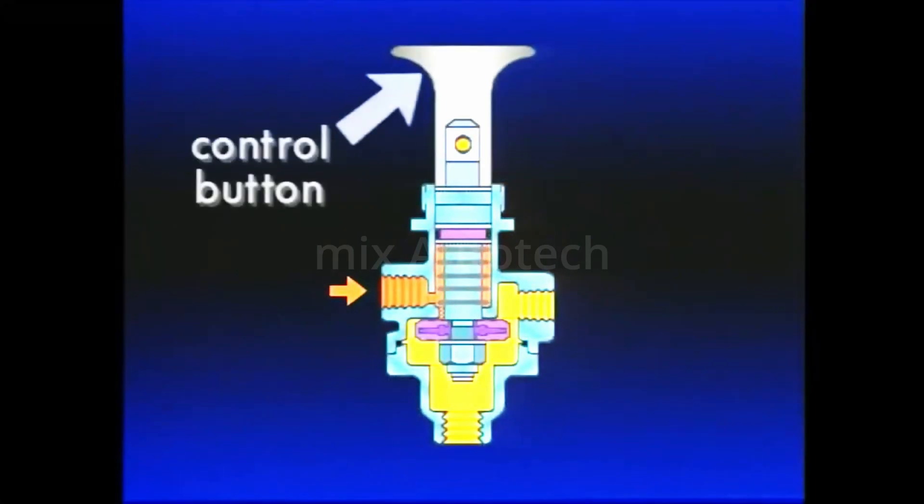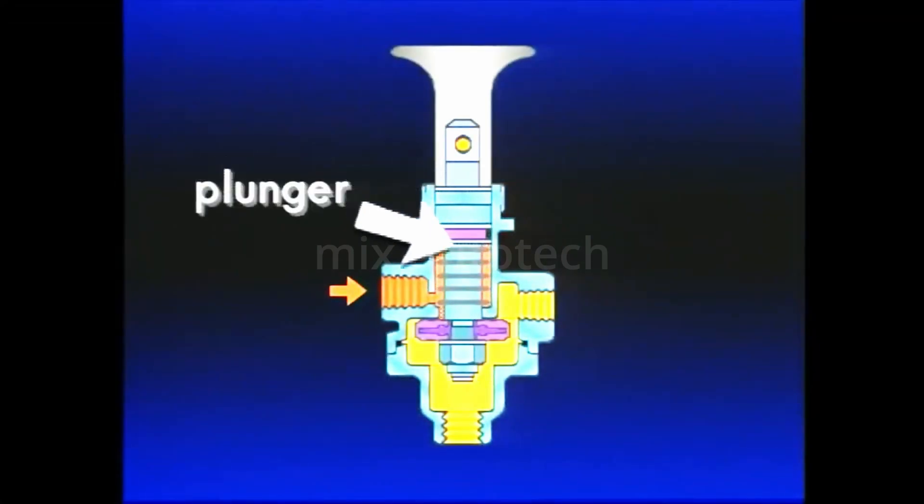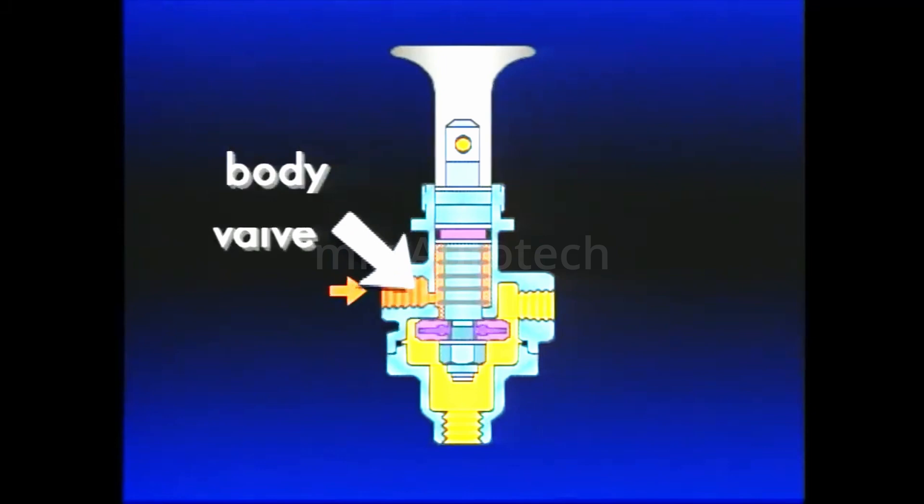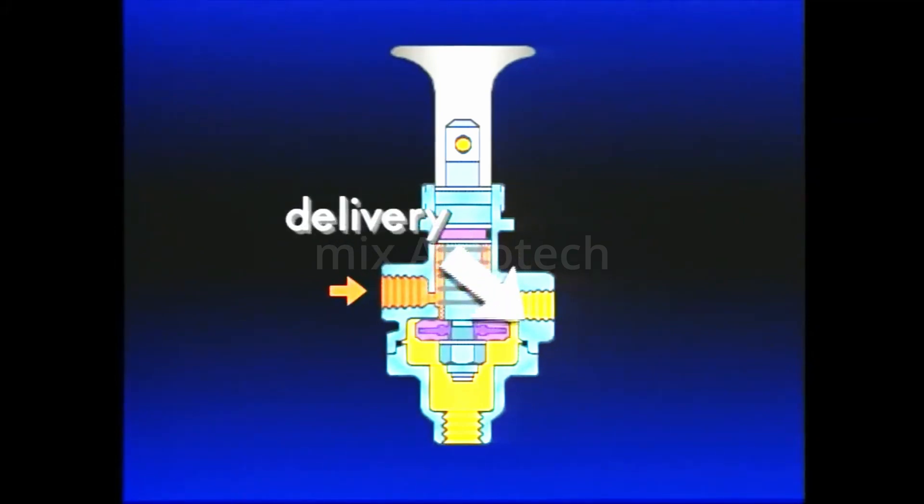It consists of a control button, plunger, spring, inlet exhaust valve, and body. The body has three types of ports: supply, delivery, and exhaust.